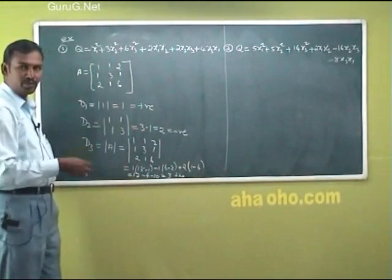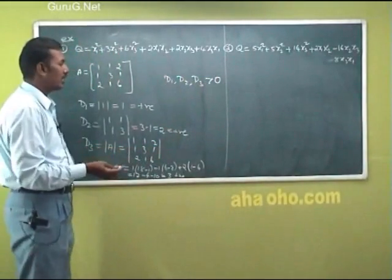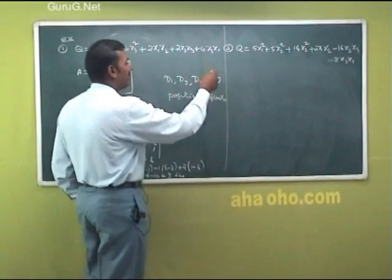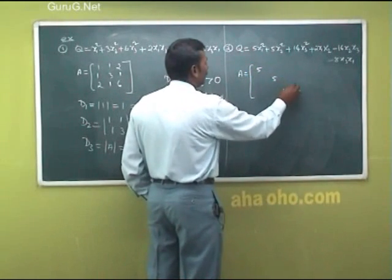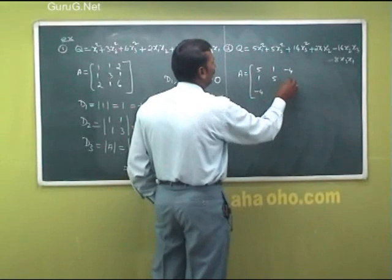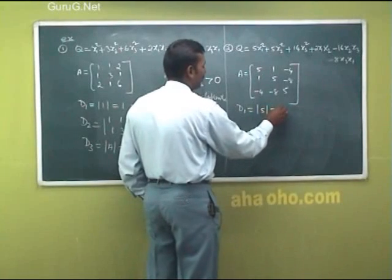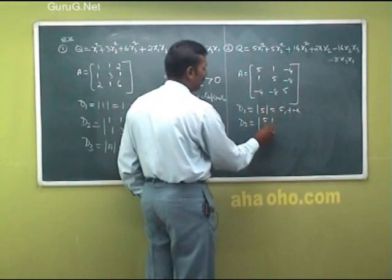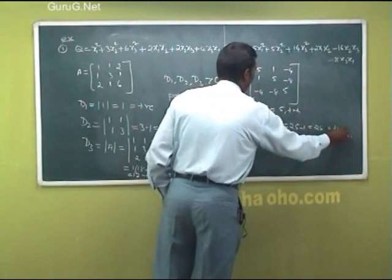If D1, D2, D3 are all positive, the nature of the quadratic form is positive definite. In the example, the diagonal elements (coefficients of xᵢ²) are 1, 1, then −4, −4, −8. D1 equals the first element, which is positive. D2 is the determinant of the first 2×2 submatrix.